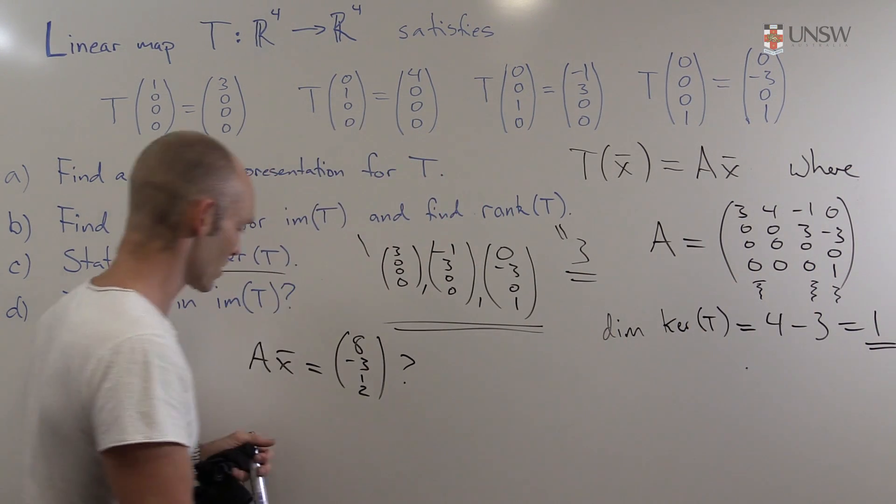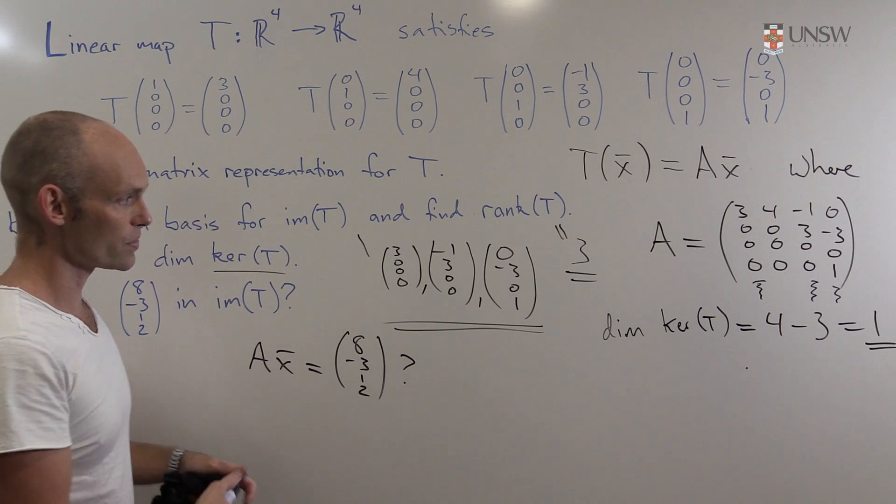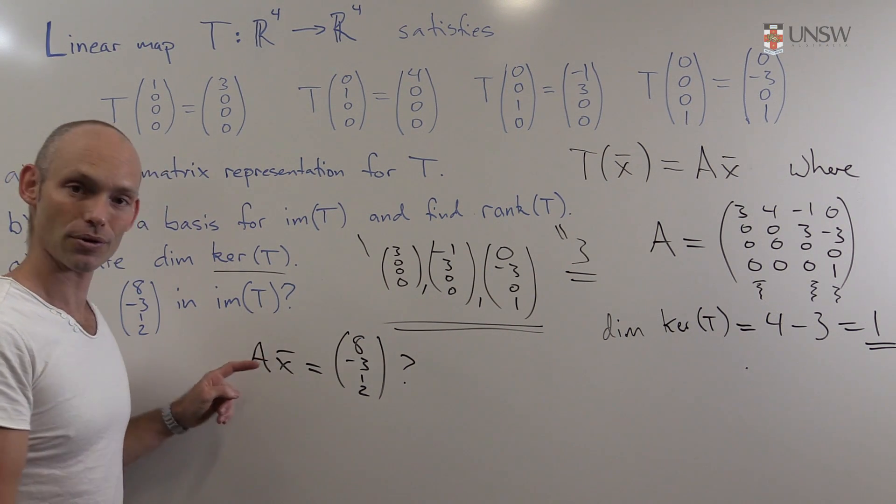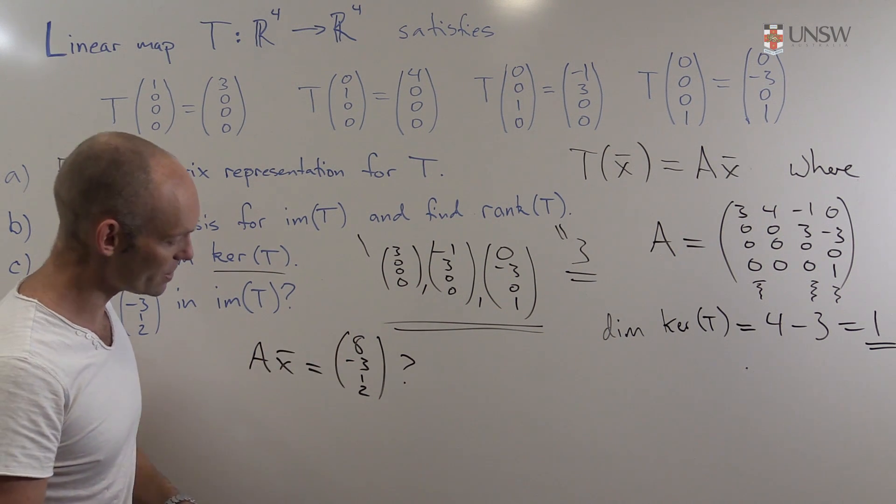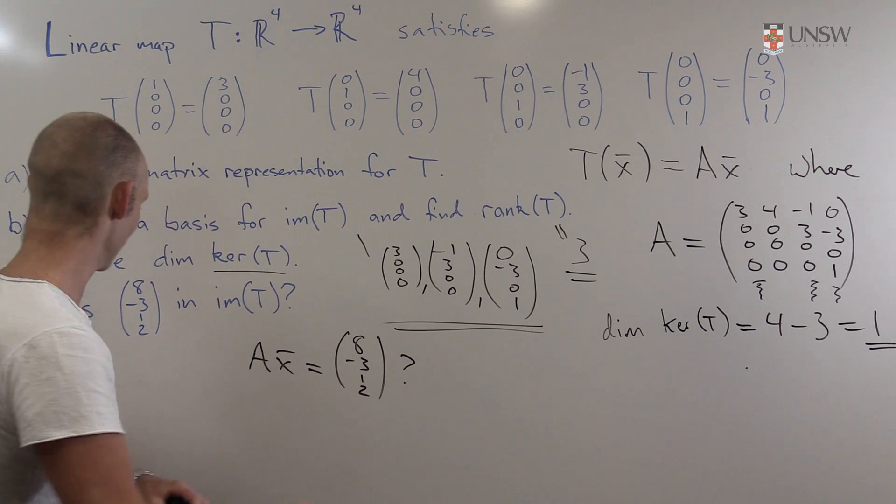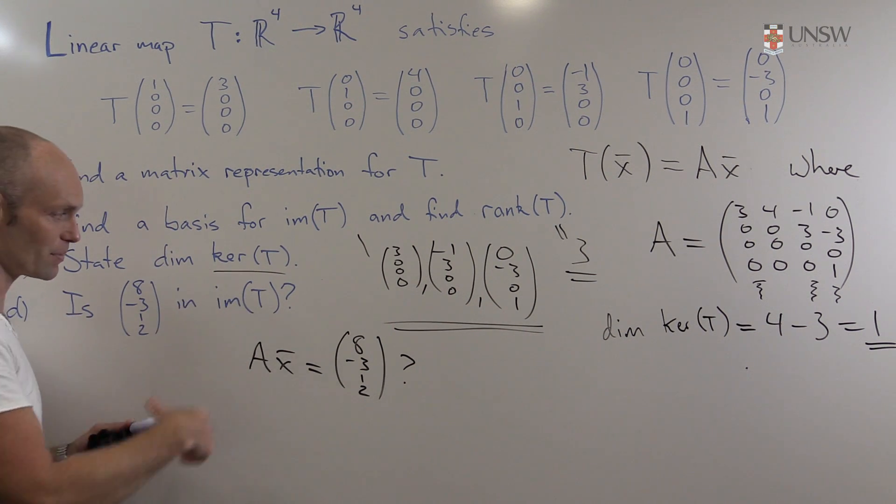So no matter the linear combination of these columns, or in other words, no matter the vector that we multiply onto A, the result will always, on the left-hand side, be some vector with a 0 in the third coordinate. Whereas over here on the right, we'll always get a 1. So there will be no solutions. Or in other words, this vector is not in the image of T.